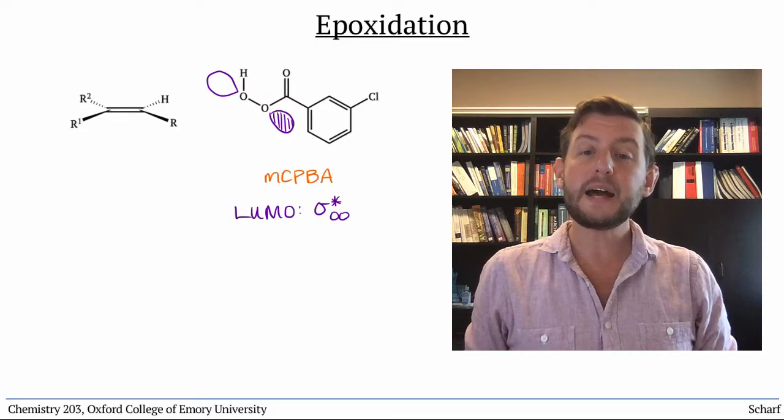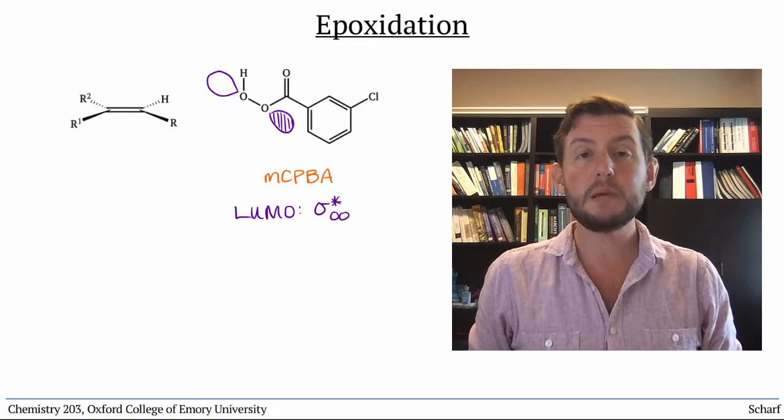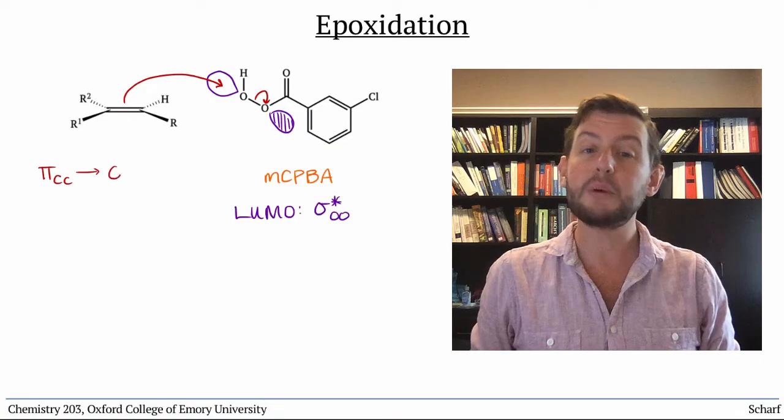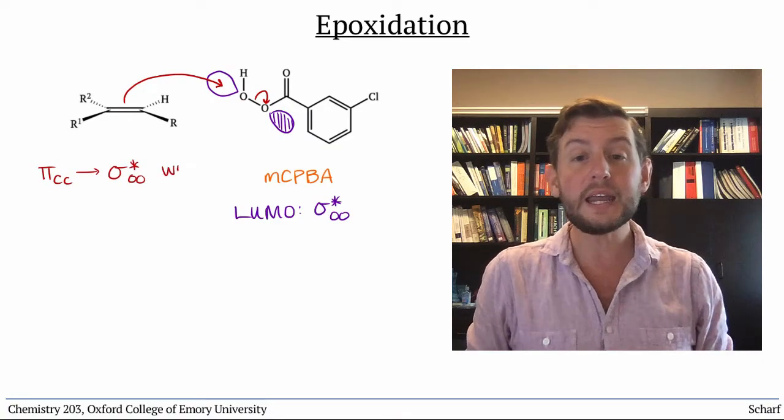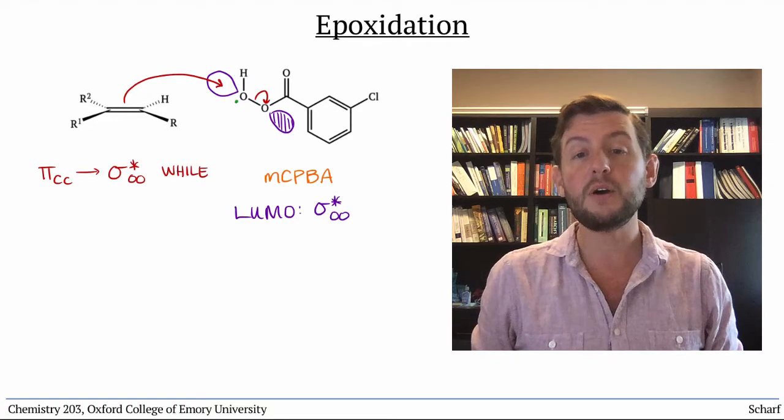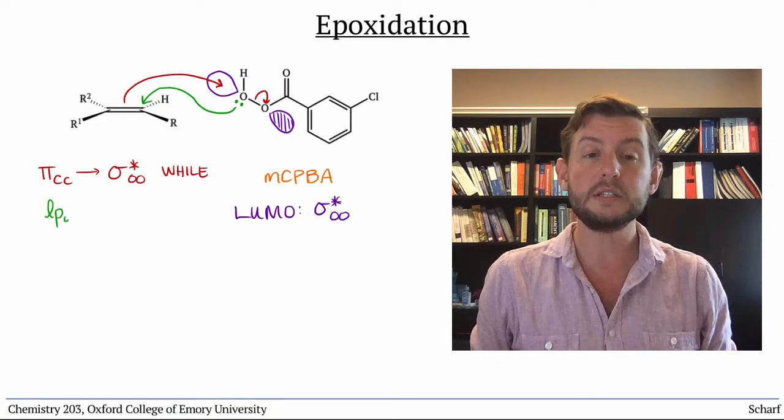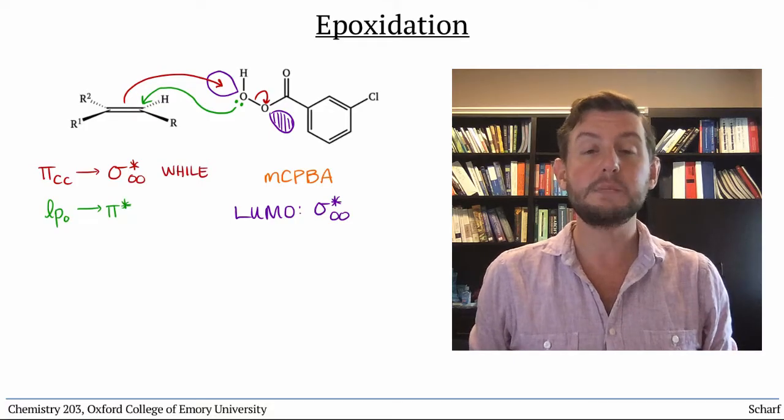So when an alkene reacts with MCPBA, pi-CC donates into sigma-star-OO, breaking the OO bond, while simultaneously the HOMO of MCPBA, a lone pair on the sp3-oxygen, donates back into pi-star-CC.